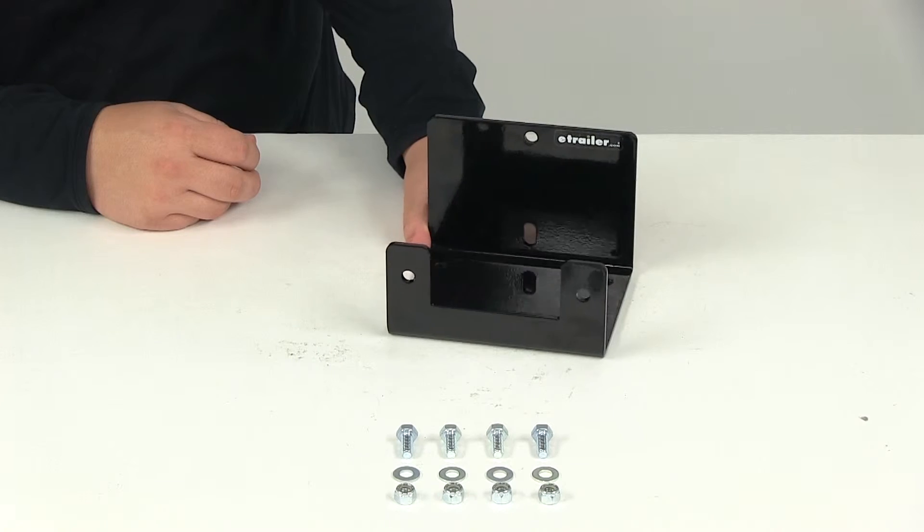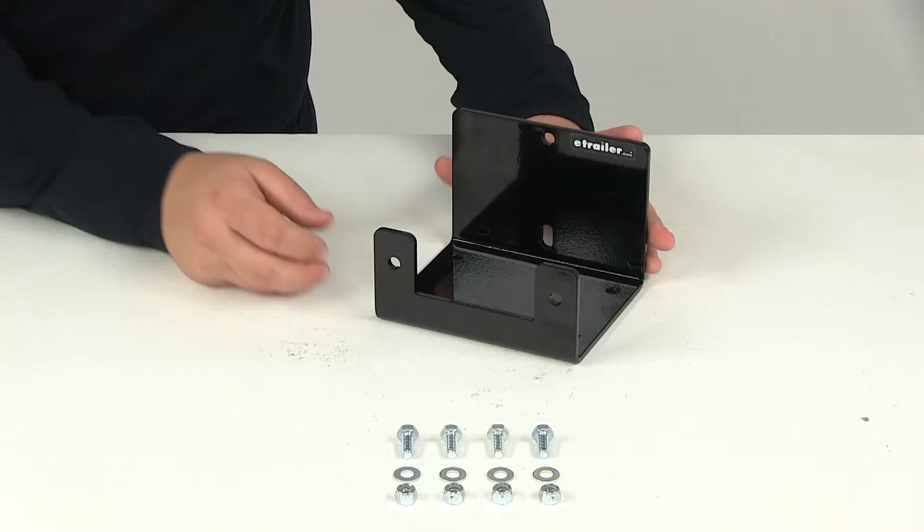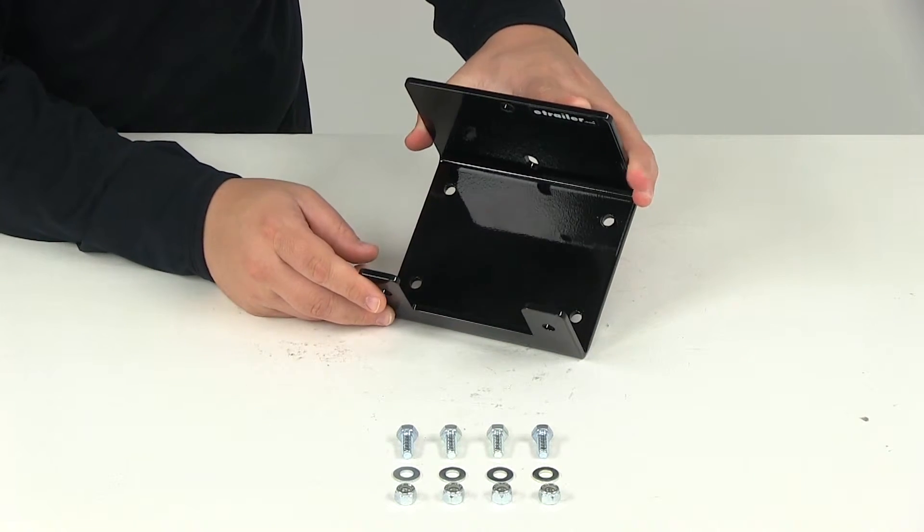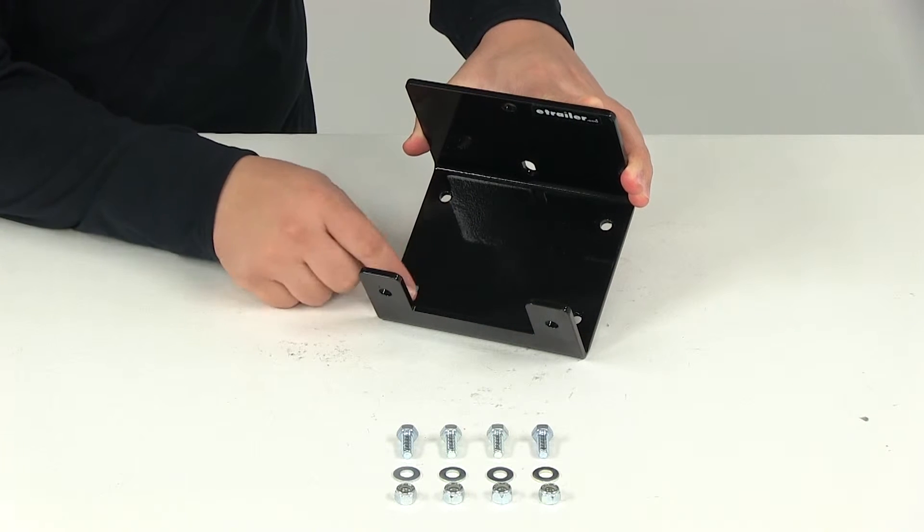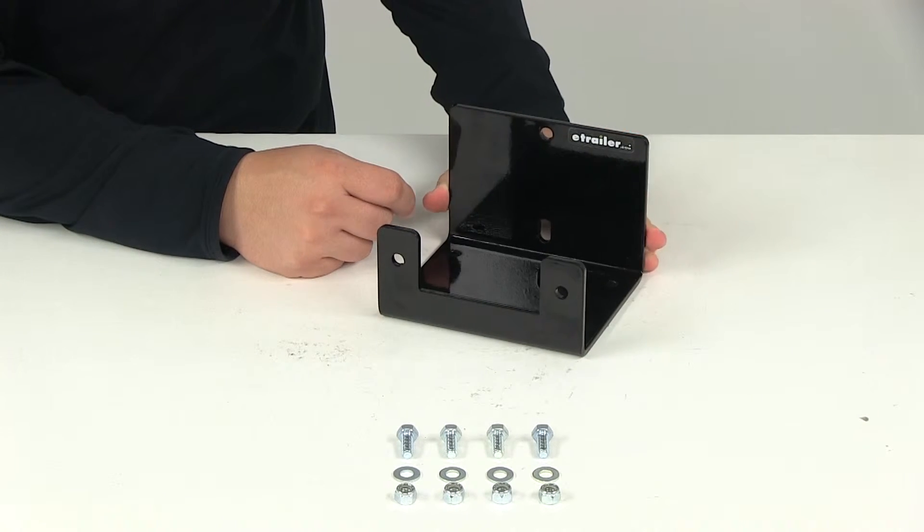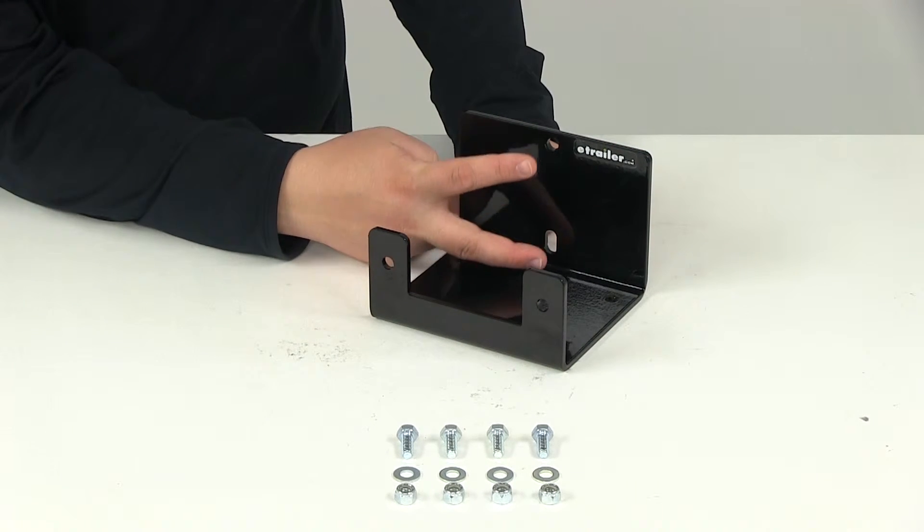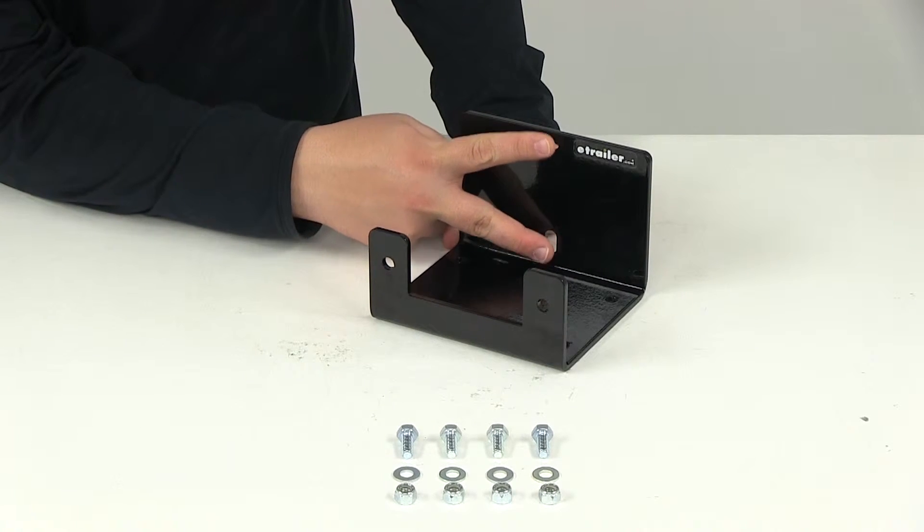This mount will accept winches with a four bolt or two bolt mounting pattern. The four bolt mounting pattern style will mount here on the bottom plate. You can see the four bolt holes. The two bolt style will mount vertically here on the back plate with these two locations.